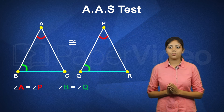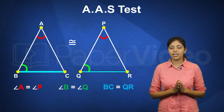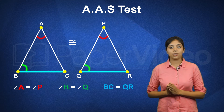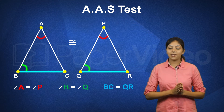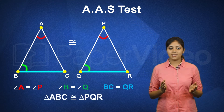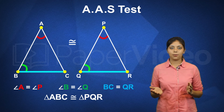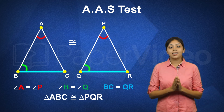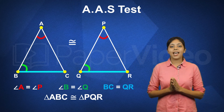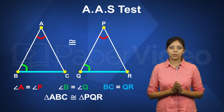and side BC equals side QR, then we can say that triangle ABC is congruent to triangle PQR. This is known as the Angle-Angle-Side test of congruency.